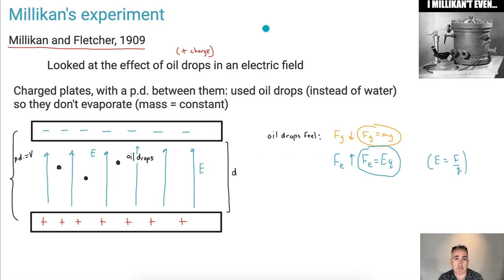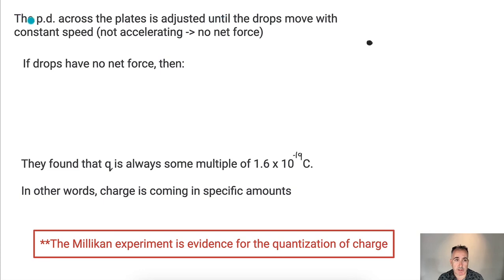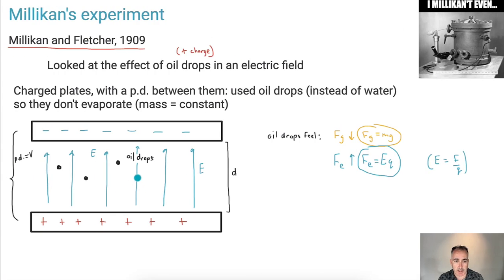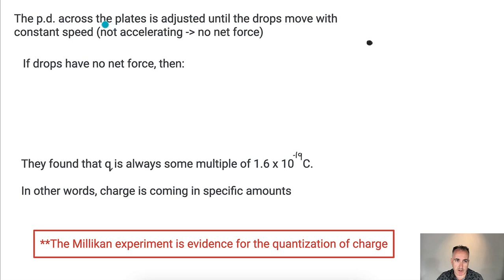What does this mean for us? Well, this might make them accelerate—they might go up, they might go down. It all depends on the strength of the electric field. As they play around with the potential difference across these plates, obviously a bigger potential difference makes a bigger electric field. So if they make it really high, they can make them go up. If they make it really small or turn it off, then the drops will go down because of gravity.